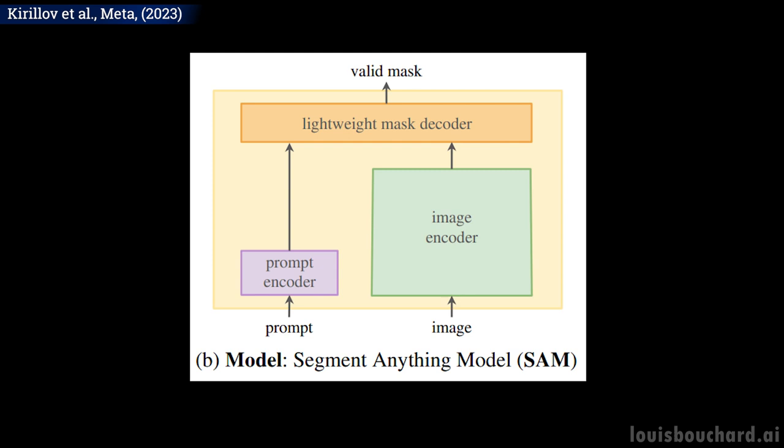Having this prompt encoder separated from our image encoder is what makes the approach so fast and responsive since we can simply process the image once and then iterate prompts to segment multiple objects, as you can see by yourself in their online demo.